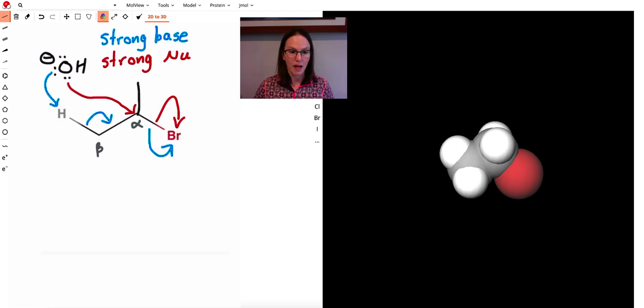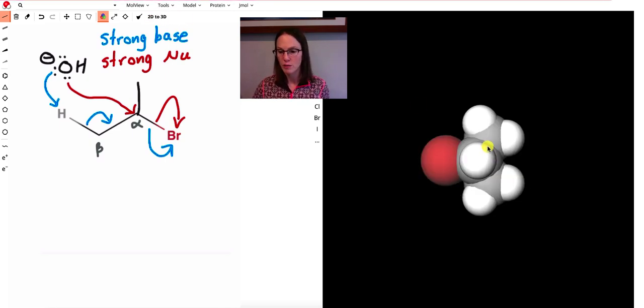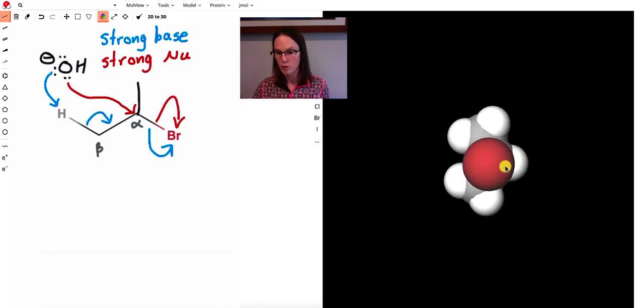So now let's look at what happens when that alpha carbon is secondary. It's bound to two things besides hydrogen atoms. If we convert that into three dimensions, we look at it in the space-filling model, rotate it around.